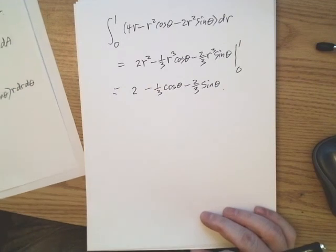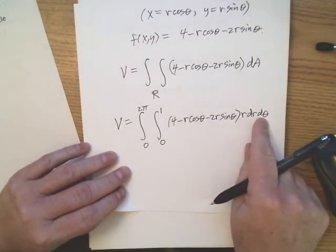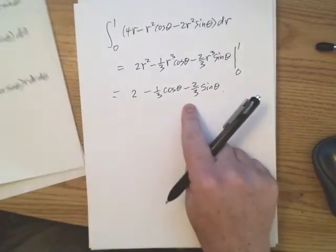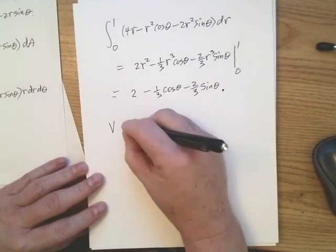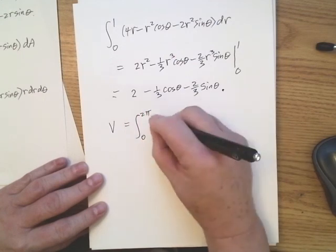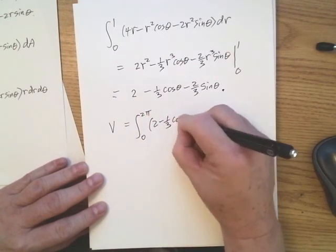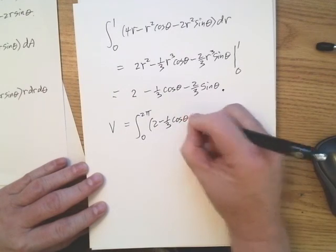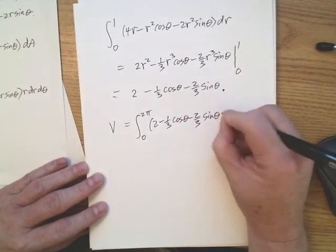That's the inner integral, evaluated at r equals one. Subtracting zero, we have two minus one third cosine theta minus two thirds sine theta. Now we still need to integrate this result with respect to theta from zero to two pi. So V is the integral from zero to two pi of two minus one third cosine theta minus two thirds sine theta d theta.